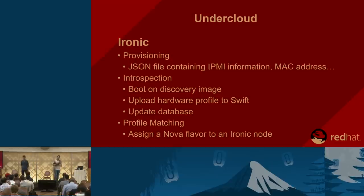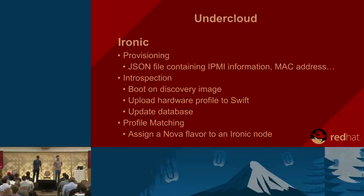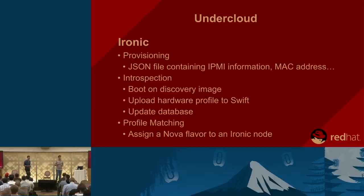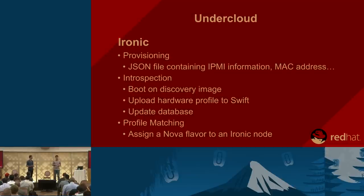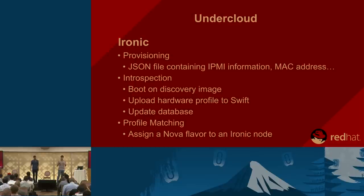When hardware discovery is done, a special ramdisk called the discovery ramdisk uploads all that information to Swift and updates the Ironic database. With hardware information stored in Swift on the undercloud, you can assign a Nova flavor to an Ironic node — defining whether it will be a compute, controller, or storage node. You can do this manually, but if you have thousands of servers you can automate it with a tool called AHC (Automated Health Check), which reads the Swift data and assigns Nova flavors automatically.